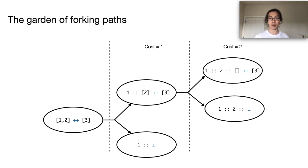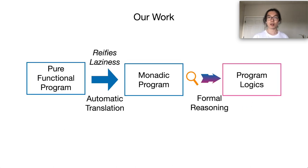These are the key ideas behind the clairvoyant monad and our transformation strategy. In the paper, we talk about the definitions of clairvoyant monad and our transformation strategy in more detail. We also prove an equivalence theorem of our semantics with respect to the semantics of Hackett and Hutton in our paper. Now that we have encoded the computation cost of lazy programs inside the clairvoyant monad, let's move on to talk about how we can formally reason about it.